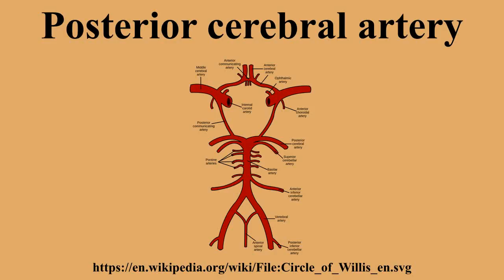The cortical branches are: anterior temporal, distributed to the uncus and the anterior part of the fusiform gyrus; posterior temporal, to the fusiform and the inferior temporal gyri; lateral occipital, which branches into the anterior, middle, and posterior inferior temporal arteries; and medial occipital, which branches into the calcarine — to the cuneus, gyrus lingualis, and the back part of the convex surface of the occipital lobe — parieto-occipital, to the cuneus and the precuneus, and the splenial or posterior pericallosal branch, which sometimes anastomoses with the anterior cerebral artery.